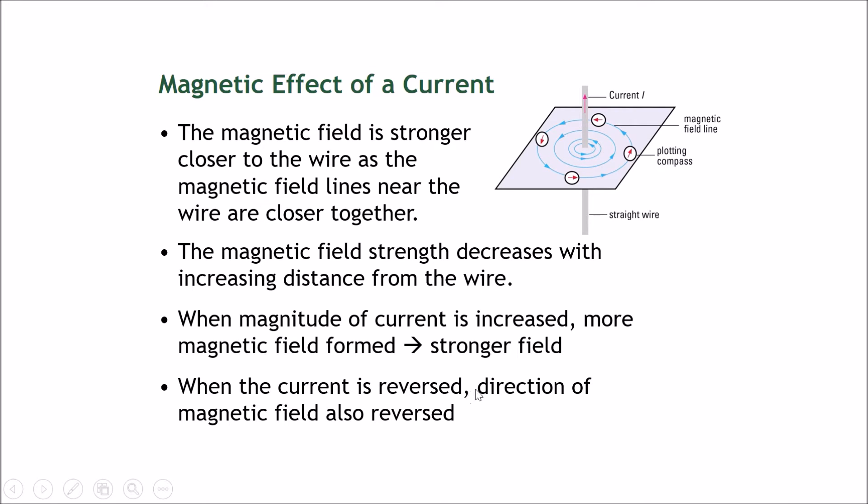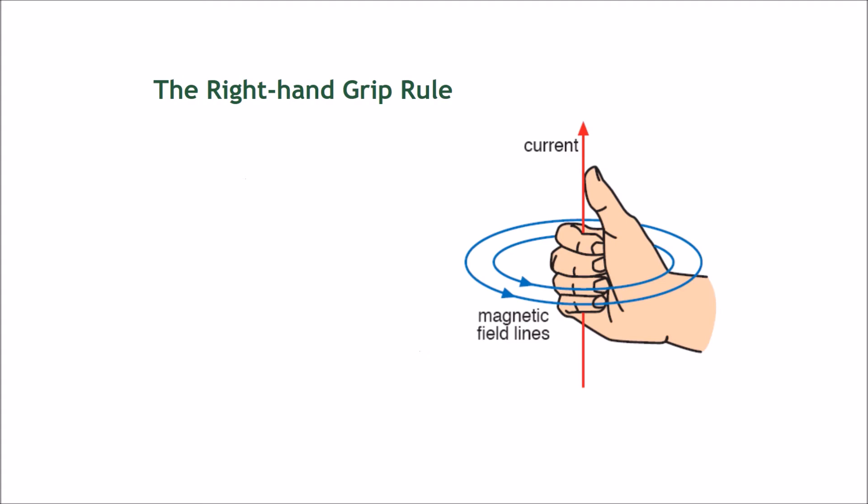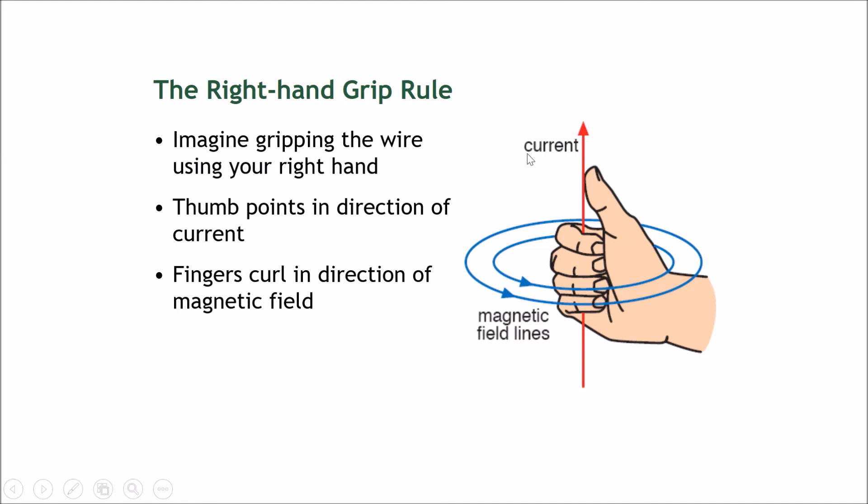Also, when the current is reversed, the direction of magnetic field is also reversed, and this can be determined by a very familiar rule, which is the right hand grip rule. Imagine gripping the straight wire with your right hand, and if you point your thumb in the direction of the current, and your fingers curling in this direction, this will be the direction of the magnetic field around a single wire.